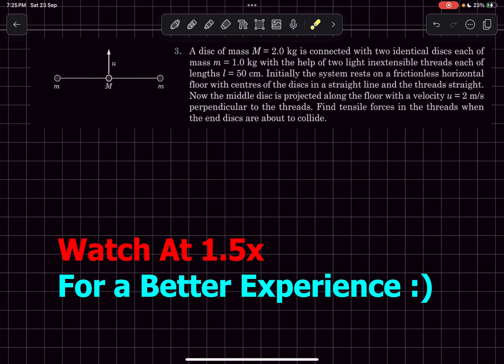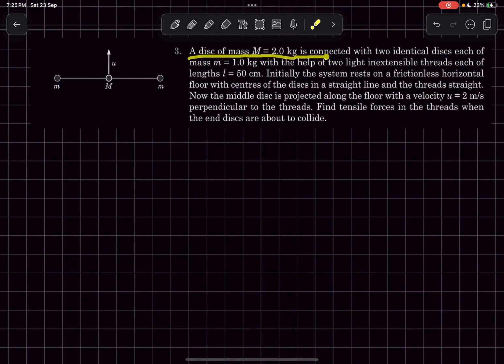So let's read the problem statement. We have a disk of mass capital M that is connected with two identical disks each of mass small m with the help of two light inextensible strings each of length L.